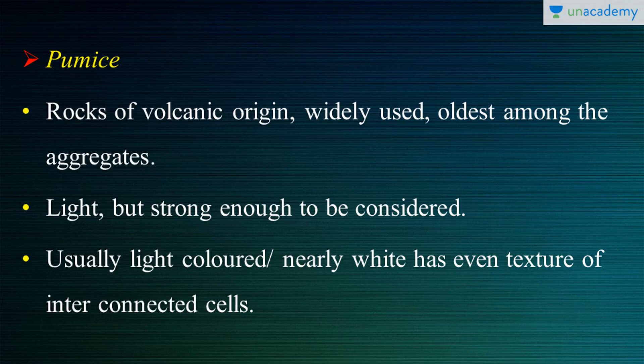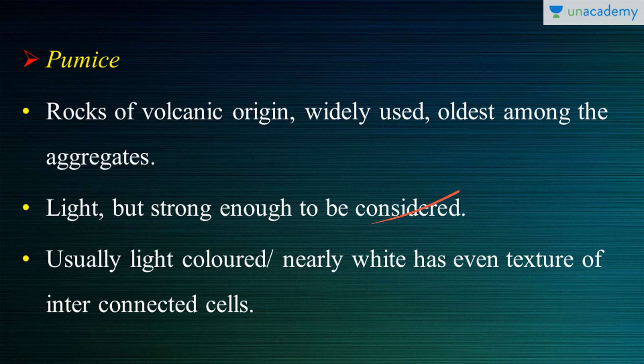The first one is Pumice — one of the most relatable substances that we all know well, as it is also used in the cosmetic industry today. Pumice can also be used as a lightweight aggregate. These are rocks of volcanic origin and are one of the most widely used lightweight aggregates in lightweight concrete. It is also among the oldest lightweight aggregates used to date, with history tracing back to the Roman Empire. While Pumice is light, it is strong enough to be considered as an aggregate.